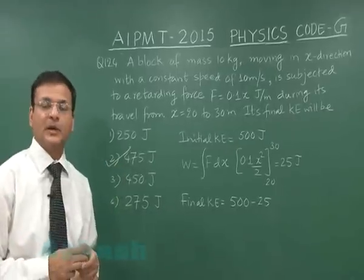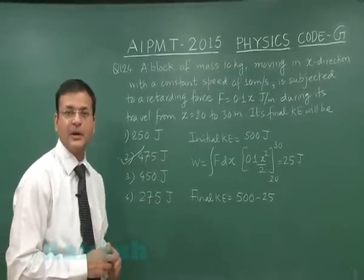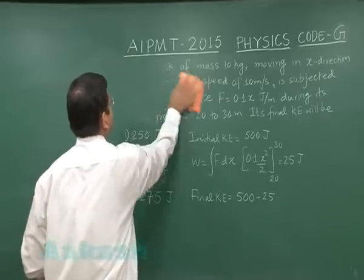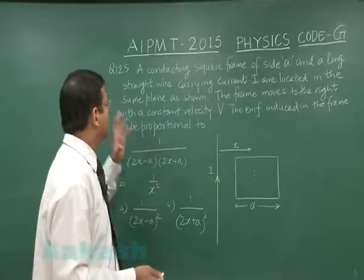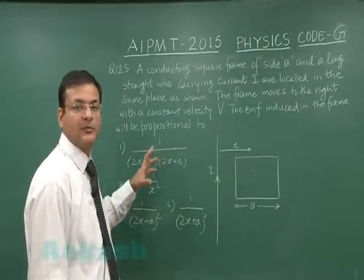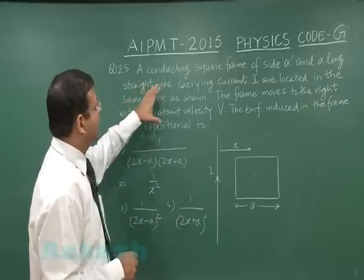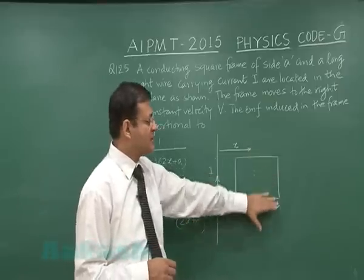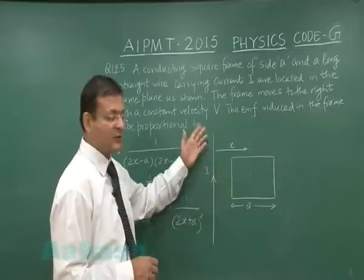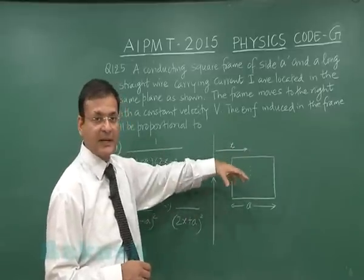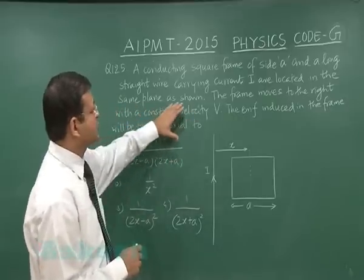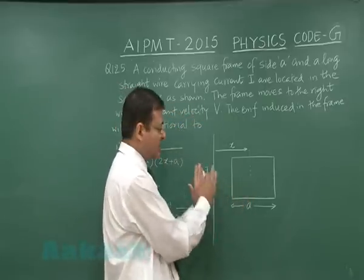Now let us switch over to question number 125. This question will be requiring some application of integration in the topic of electromagnetic induction. Here it says that a conducting square frame of side a, that means this side also is a and this side also is a, and a long straight wire. You see this is a long straight wire carrying a current I, so definitely it will be creating a magnetic field and that will be going into the plane of this square frame.